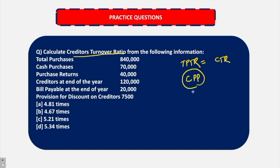CPP, if you break it down, is net credit purchase. CPP is credit purchase upon average payable. So here we have created an acronym, but the full form is net credit purchase upon average payable.